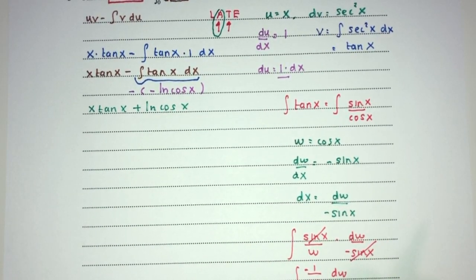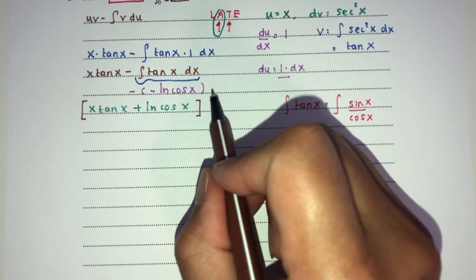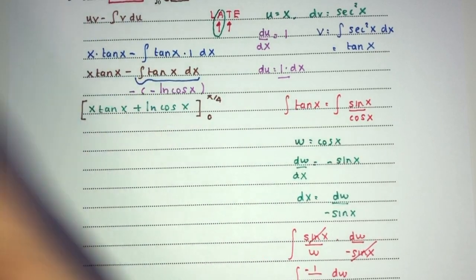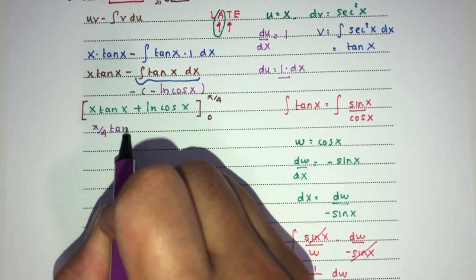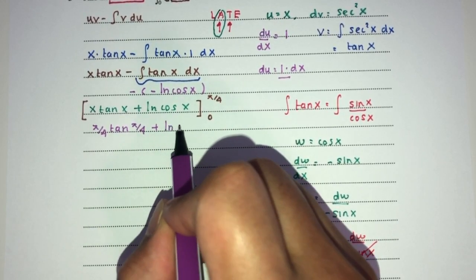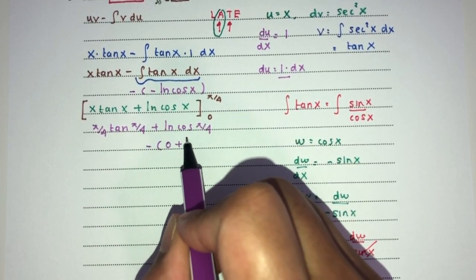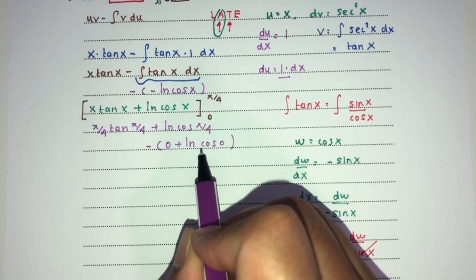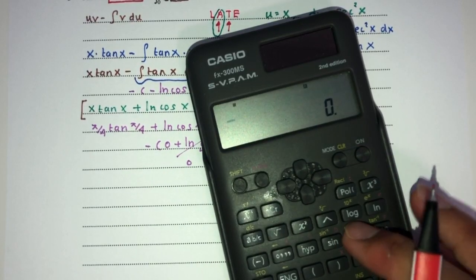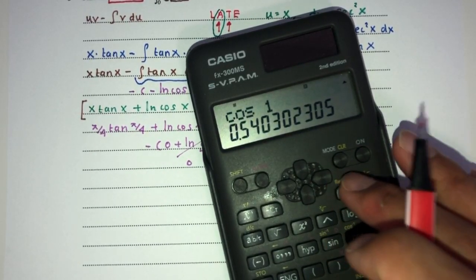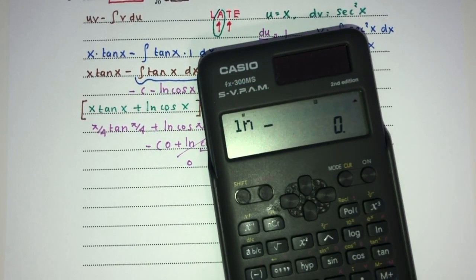Now we apply the limits, which are pi/4 and 0. Replacing: at pi/4 we have (pi/4) tan(pi/4) plus ln of cos(pi/4), minus at 0 we have 0 plus ln of cos 0. Cos 0 is 1, and ln of 1 is 0, so that cancels out. Tan(pi/4) equals tan 45 degrees equals 1, giving pi/4. Cos(pi/4) equals cos 45 degrees, which we should know.